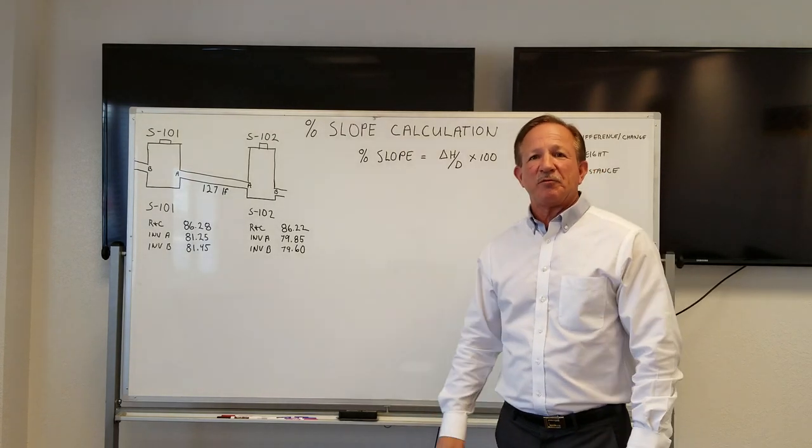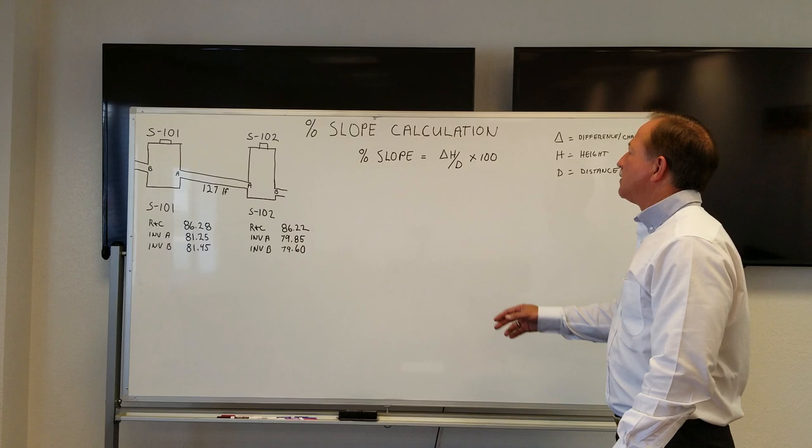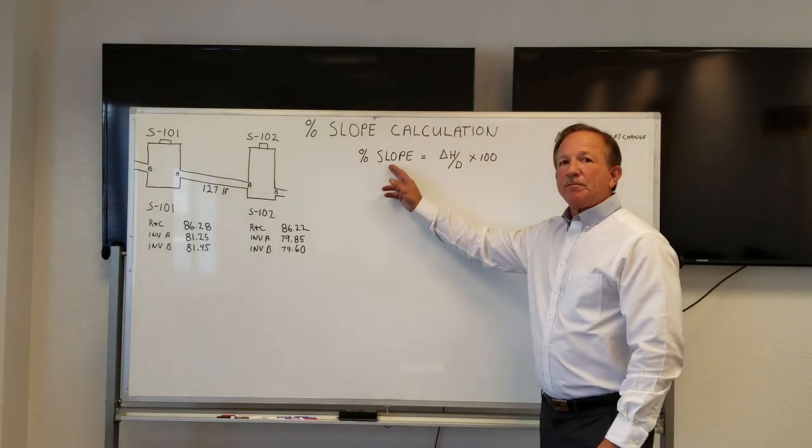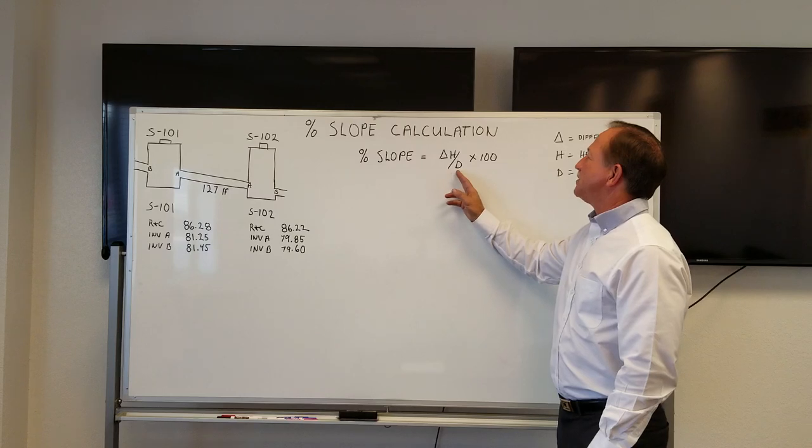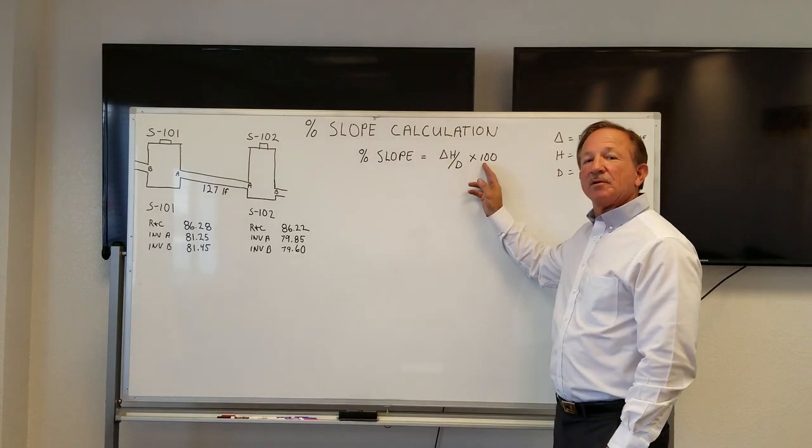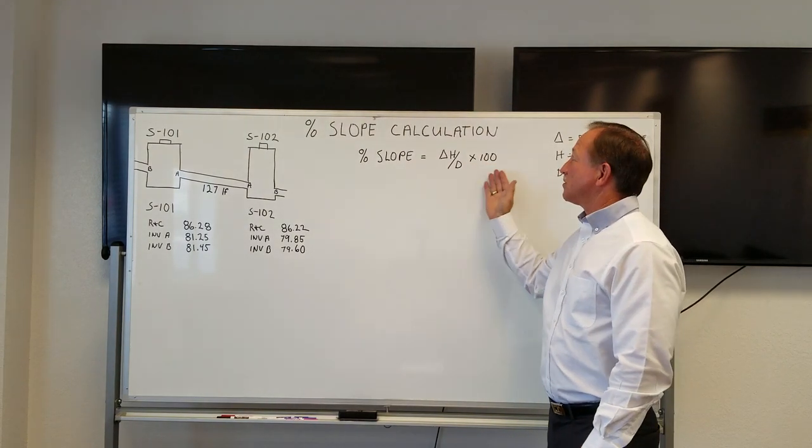It's really pretty easy, we use a simple math formula. Let's take a look at the formula: percent slope is equal to Delta H divided by D times 100.